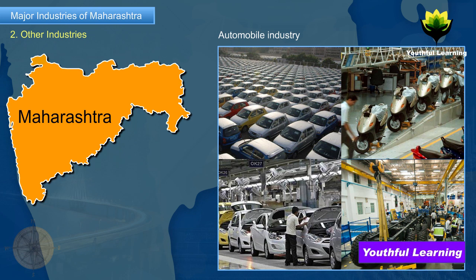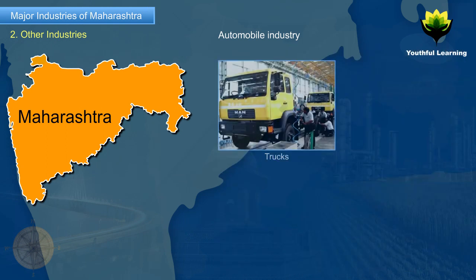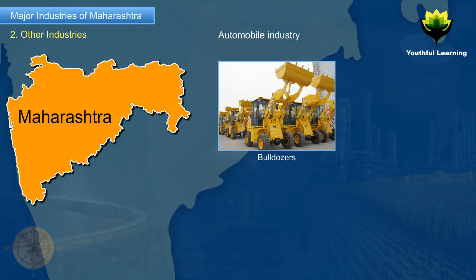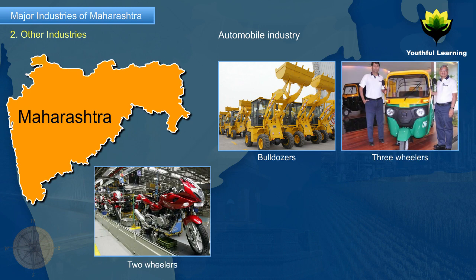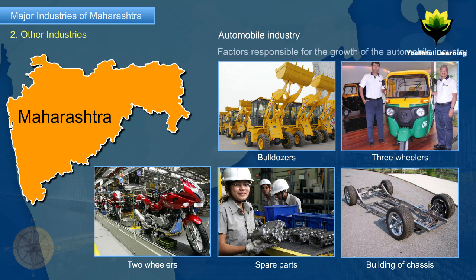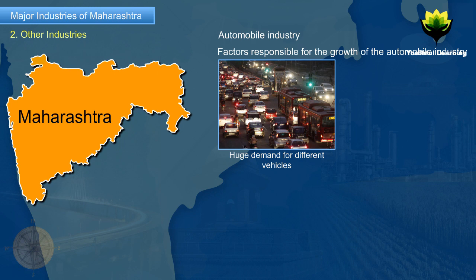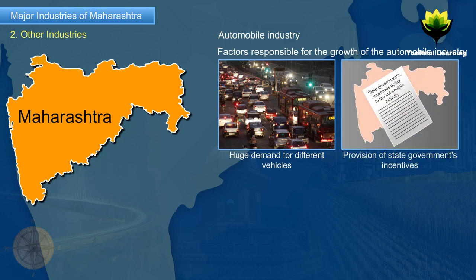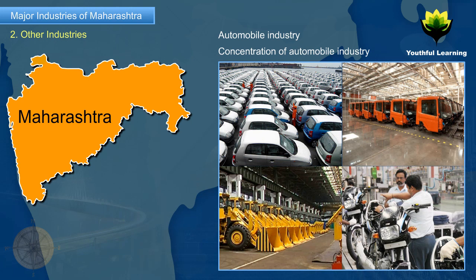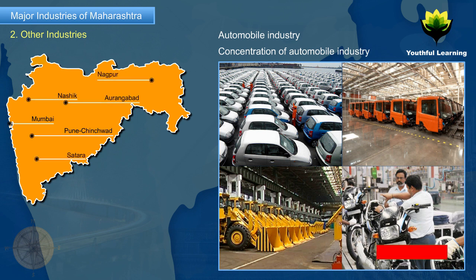Automobile Industry: The automobile industry covers the production of trucks, commercial vehicles, light vehicles, cars, tractors, bulldozers, three-wheelers, and two-wheelers, as well as production of spare parts and building of chassis. Factors responsible for the growth of the automobile industry in the state include huge demand for different vehicles from across the country, state government incentives to the automobile industry, and availability of labour, capital, and fuel. The automobile industry is concentrated in Mumbai, Pune-Chinchwad, Aurangabad, Satara, Nasik, Nagpur, and Jalgaon.